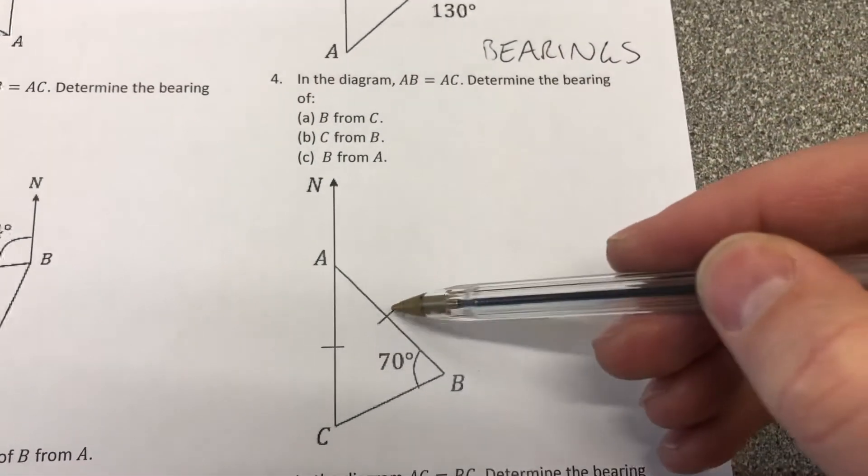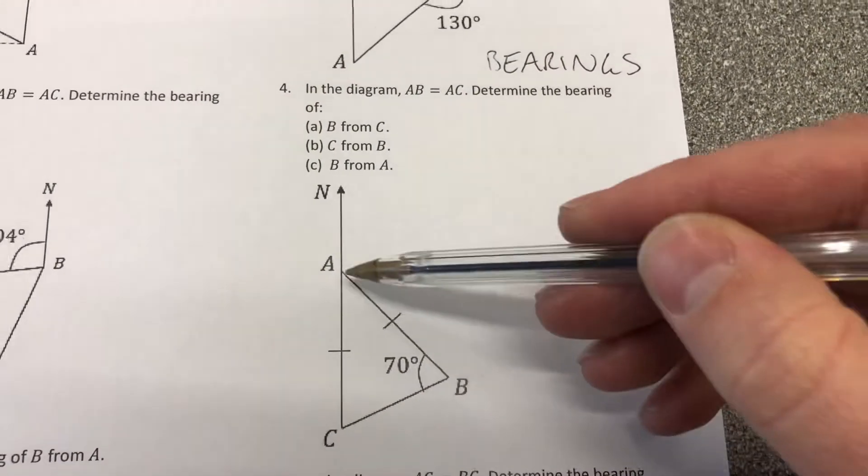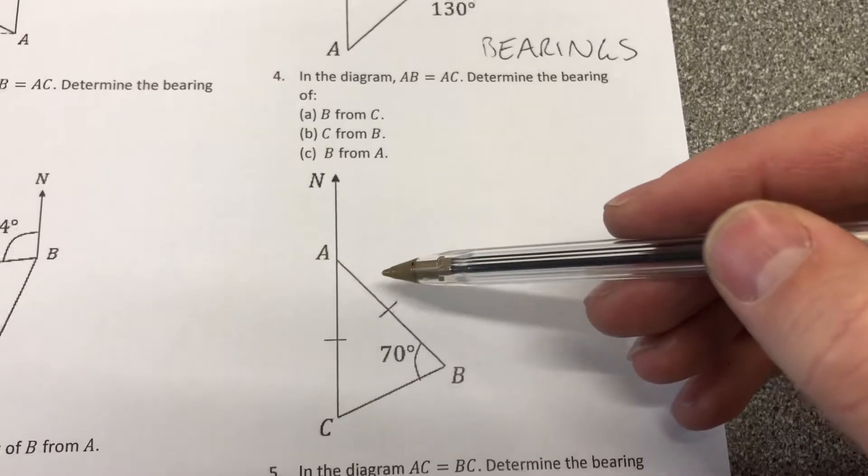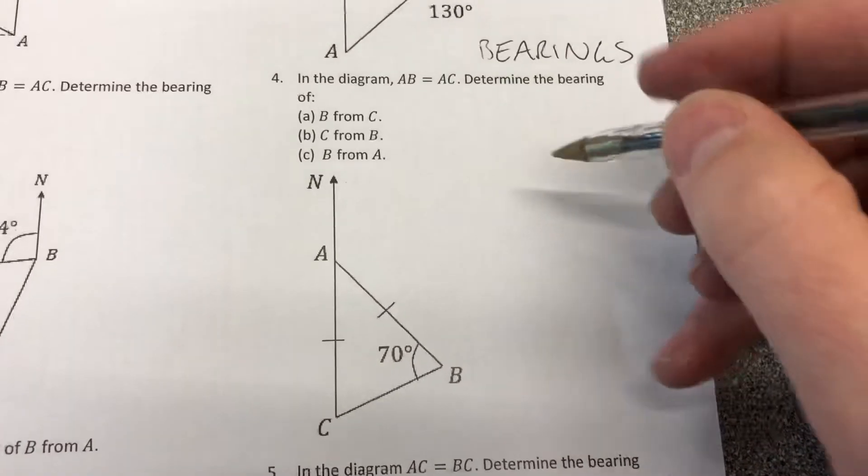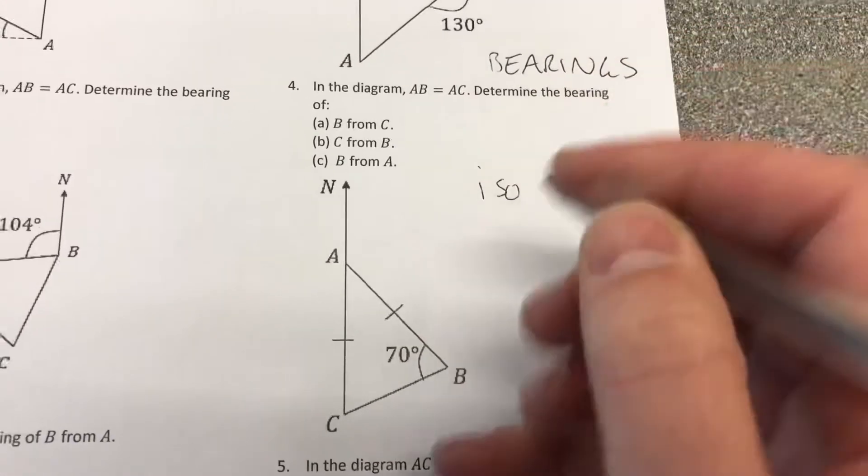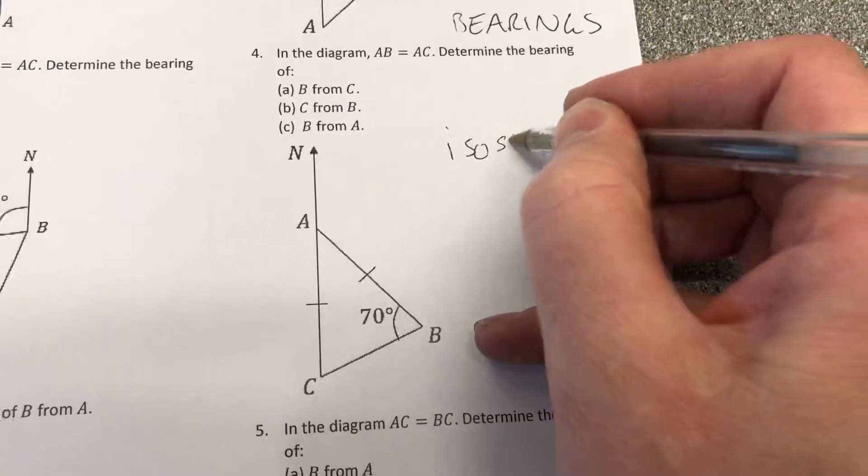So we've got north there, we've got these two dashed lines. What do they mean in this triangle ABC? They're equal. What type of triangle is that? Isosceles. It's an isosceles triangle. So we've got some information we need to work with there.